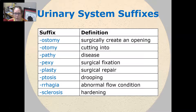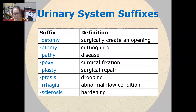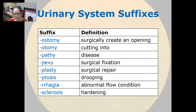Ostomy is to surgically create an opening and otomy is cutting into. Pathy is disease and pexy is surgical fixation, whereas plasty is surgical repair. Ptosis is drooping. Rhagia is an abnormal flow condition and sclerosis is hardening.